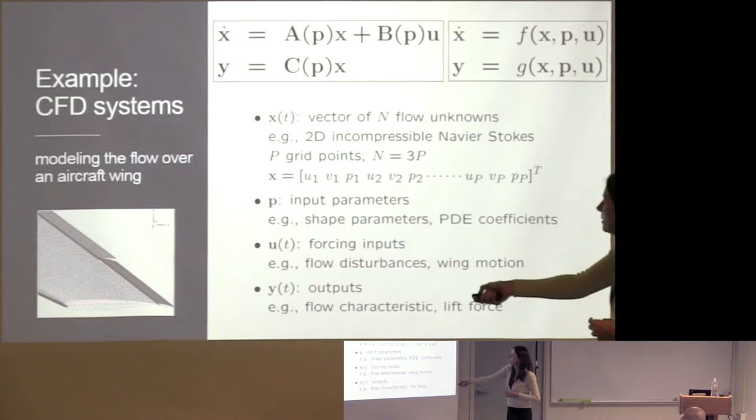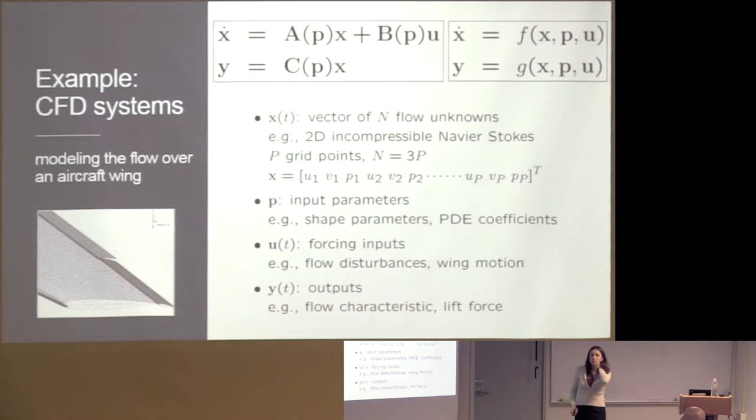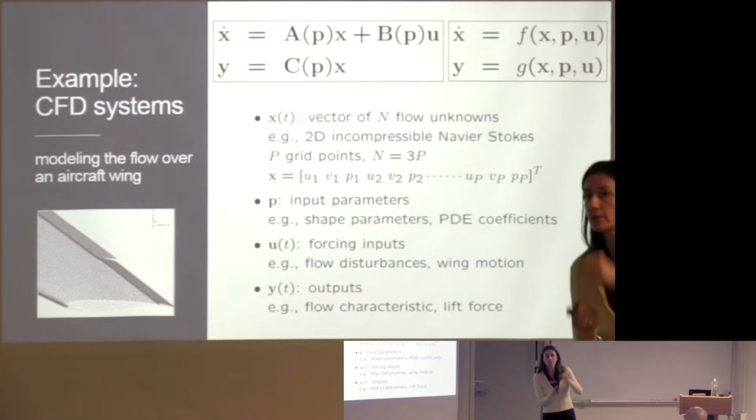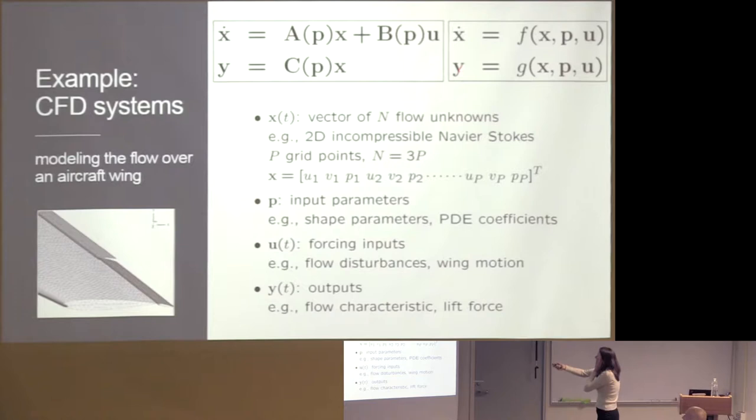What dimension do these systems have? Consider a CFD model of flow over an aircraft wing — 2D incompressible Navier-Stokes, with unknowns being velocities and pressure. When we discretize using finite elements, finite volume, or finite difference, the unknowns in the X vector are the discretized velocities and pressures. Over a wing we may have millions of grid points, so this unknown state is a dimension of millions — millions of unknowns.